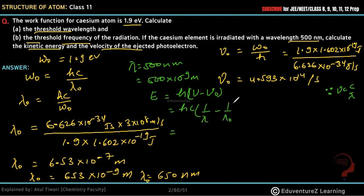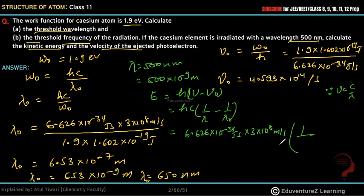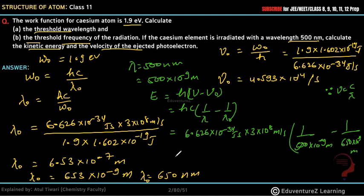The kinetic energy is calculated using KE = hc × (1/λ − 1/λ₀), with h = 6.626 × 10⁻³⁴ Joule·second and c = 3 × 10⁸ meter per second. The given wavelength λ = 500 nm = 500 × 10⁻⁹ meters. Substituting these values gives KE = 9.3 × 10⁻²⁰ Joules.